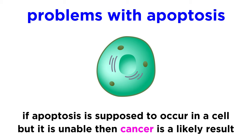And once again, as we said, when apoptosis is supposed to occur but is unable, due to mutation in genes that code for these apoptotic enzymes, cancer is a probable outcome. So that's a basic introduction to apoptosis.